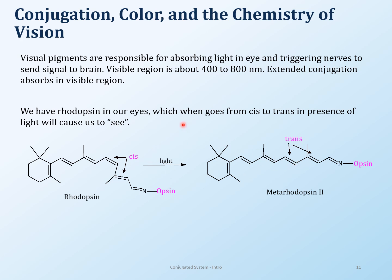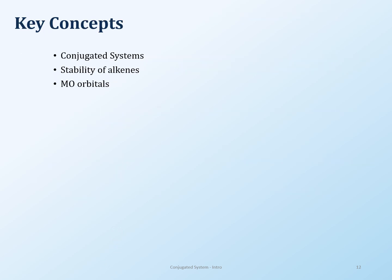Another interesting application is the chemistry of vision — how we actually see. There's rhodopsin in our eyes, and when light hits it, cis bonds become trans bonds. That conversion from cis to trans is what triggers the vision signal. It's a remarkably small chemical change — going from cis to trans — and suddenly you see everything. We'll go on further to cover reactions of conjugated systems.